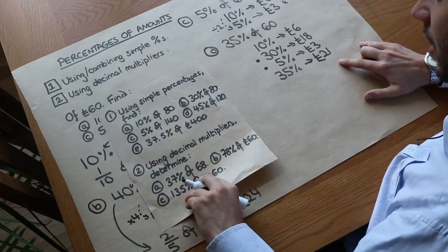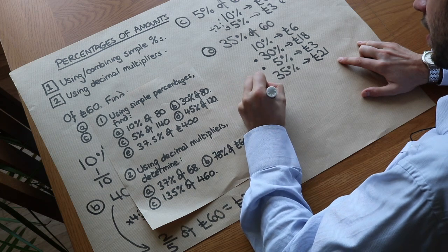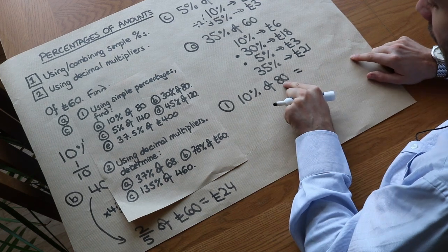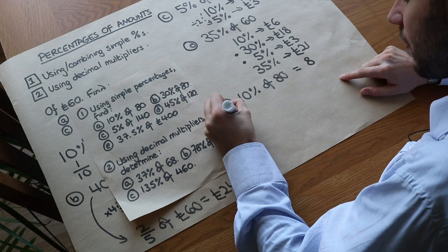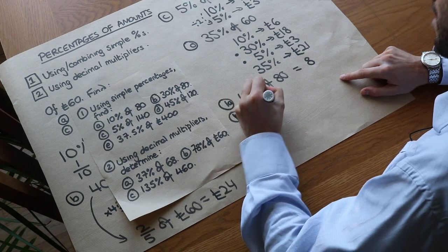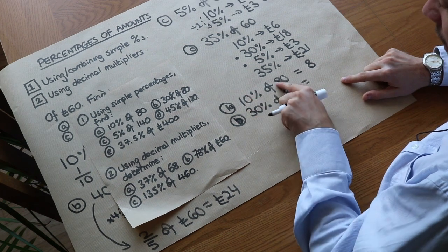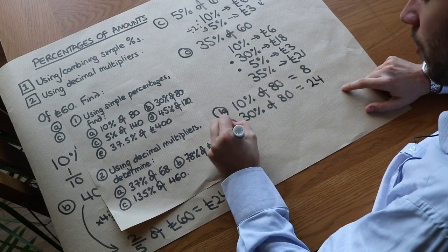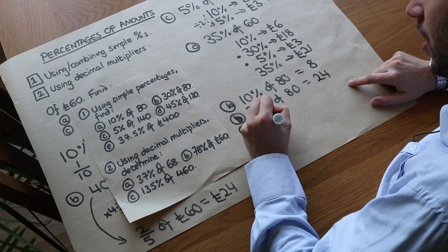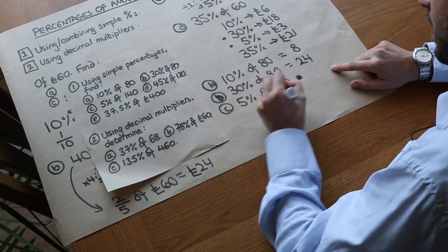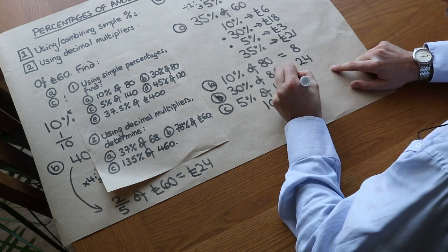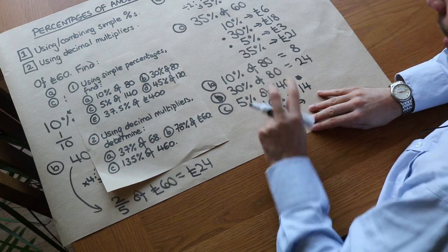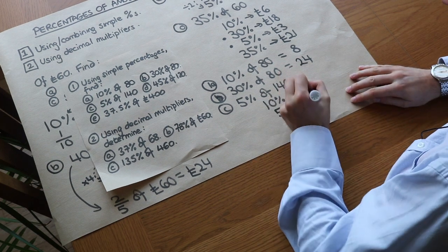Now let's use this approach for more examples. Ten percent of 80 — a tenth of 80 is simply 8. For 30% of 80: 30% is three times as much as 10%, so 8 × 3 = 24. For 5% of 140: 10% of 140 is a tenth, which is 14, and 5% is half of that — half of 14 is 7.